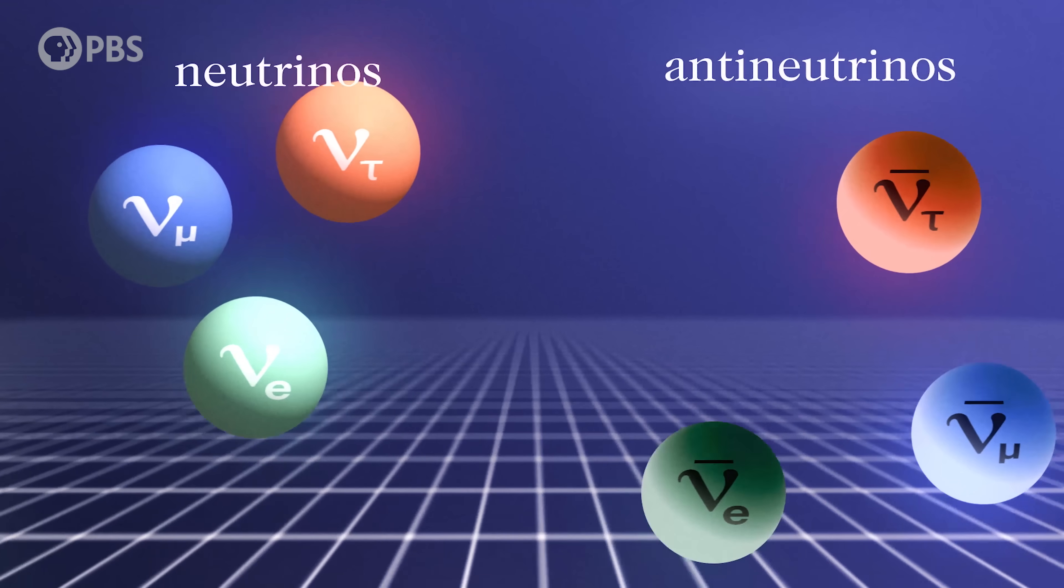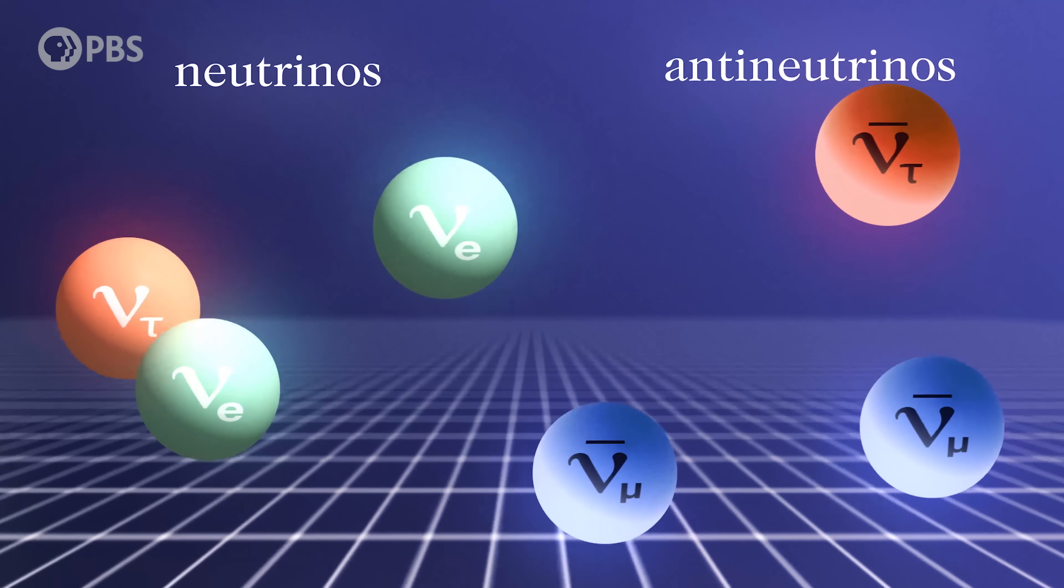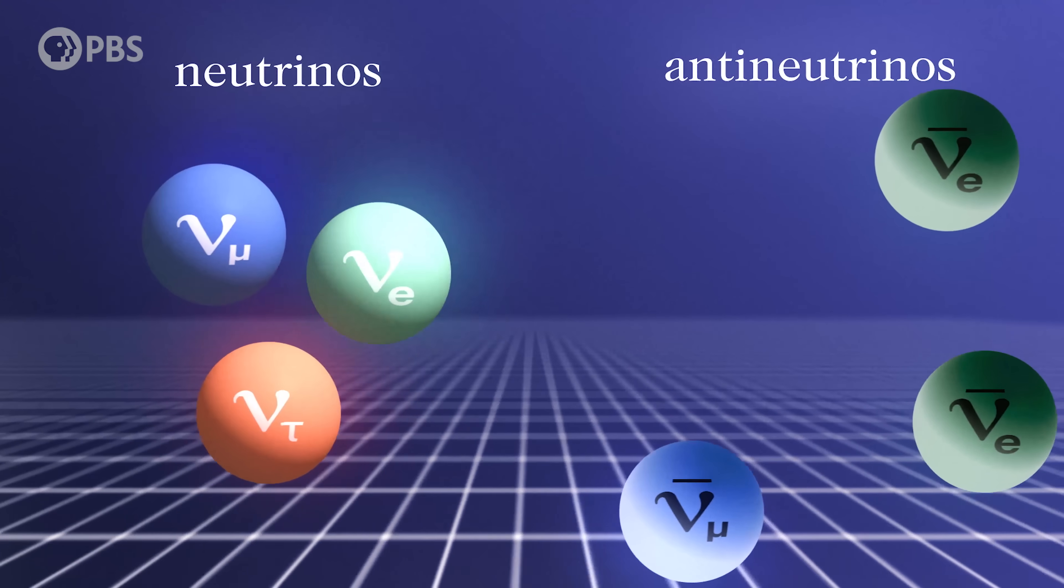If there was an imbalance in the number of neutrinos versus antineutrinos, they could lead to an ultimate imbalance in the amount of matter versus antimatter. And that same initial imbalance should also be reflected in the way neutrinos oscillate.